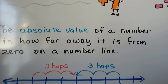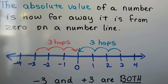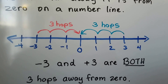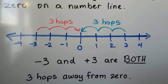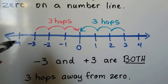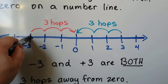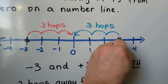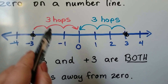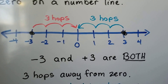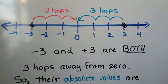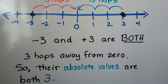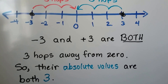The absolute value of a number is how far away it is from zero on a number line. So if we have a negative three and a positive three — here we have the negative three, here we have the positive three — they're both three hops away from zero. So both of their absolute values are three.